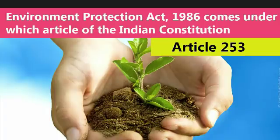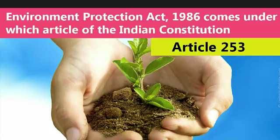Last question for this subject: The Environment Protection Act 1986 comes under which article of the Indian Constitution? The answer is Article 253. The Environment Act was enacted by the Indian Parliament under Article 253 of the Constitution of India in the year 1986.